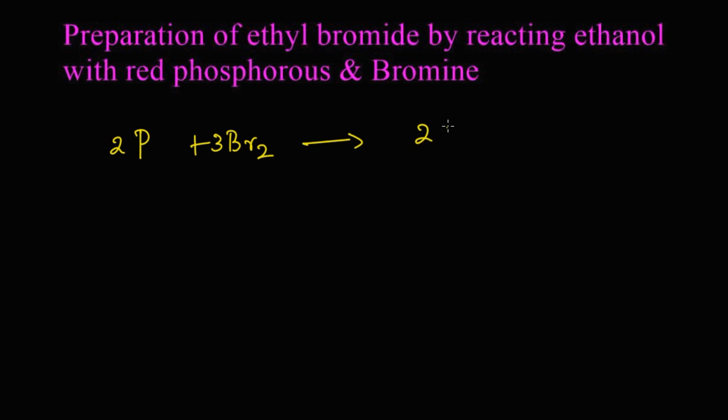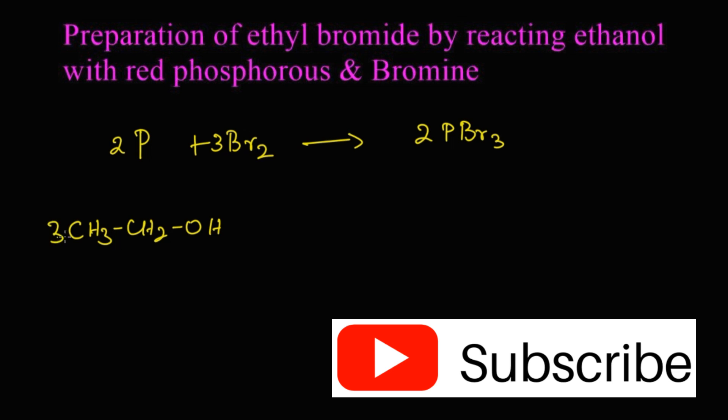This phosphorous tribromide is going to react with ethyl alcohol CH3-CH2-OH. Three molecules of ethyl alcohol are going to react with PBr3, that is phosphorous tribromide.